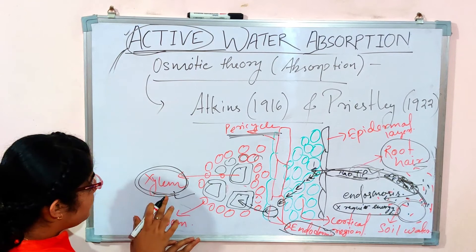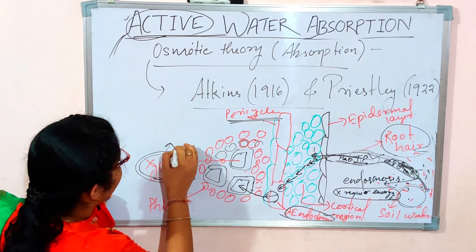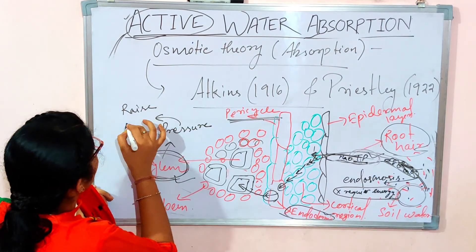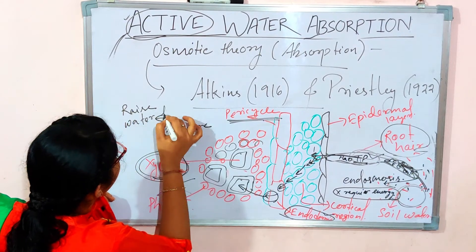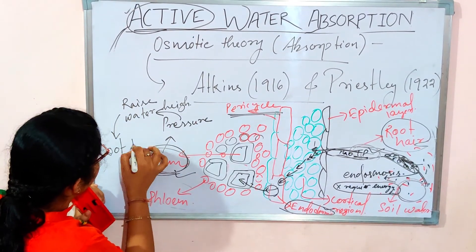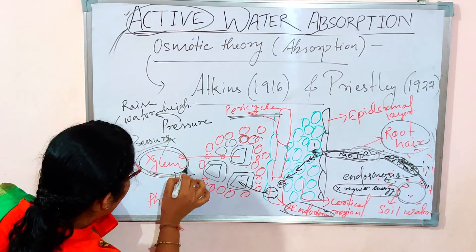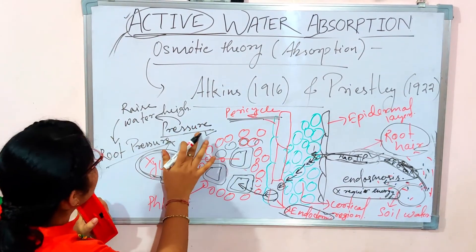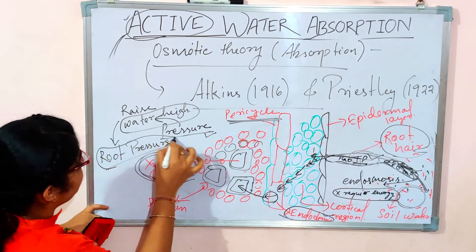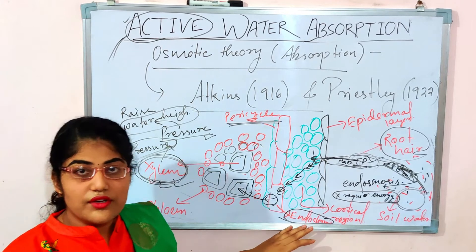Once the water reaches the xylem, it may develop a pressure that raises the water height inside the xylem column. That pressure is known as root pressure. So inside the xylem, a pressure develops that raises the water height, and that pressure is called root pressure. This completes the diagrammatic representation of the osmotic theory of active absorption.